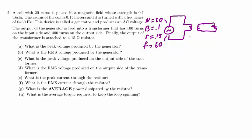The output of the generator is fed into a transformer that has 100 turns on the input side and 400 turns on the output side. Finally the output of the transformer is attached to a 15 ohm resistor.